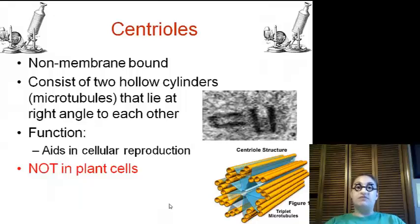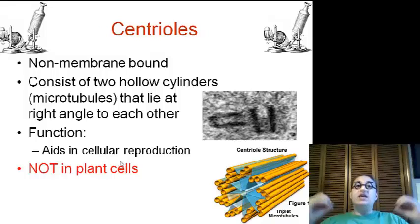Centrioles are non-membrane bound, so they are just structures that are sitting inside the cells. There are two, and they consist of hollow cylinders, or the microtubules. Remember, those are the largest types of cytoskeleton or protein fibers. They lie at right angles to each other. So here we go, each one of these yellows are going to be a microtubule. They help in the aid of cellular reproduction. So as a cell actually grows and divides, it will help keep everything where it's supposed to be so that when it divides, it has equal amounts of different items. So these are not found in plants.